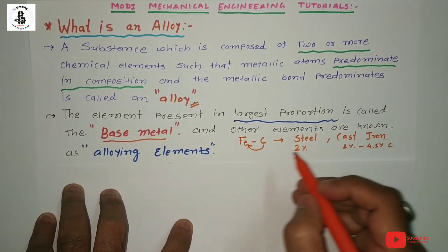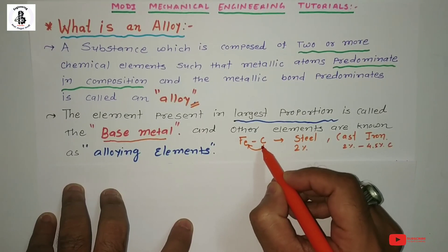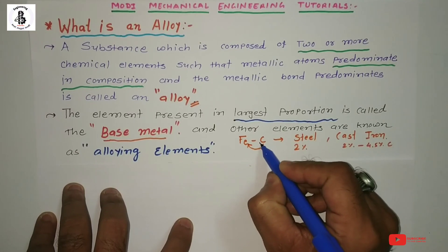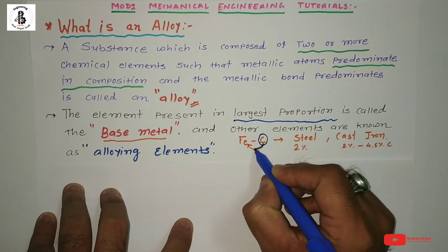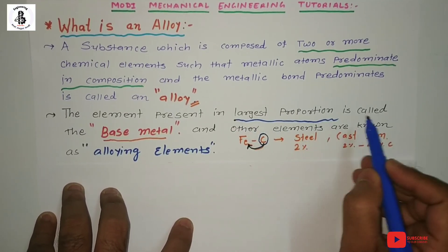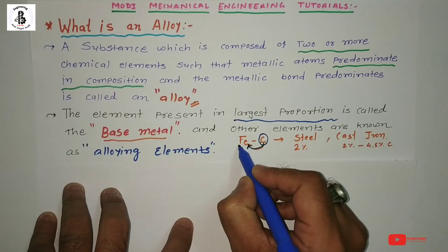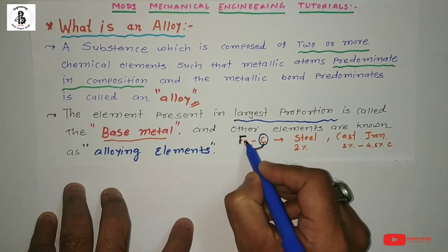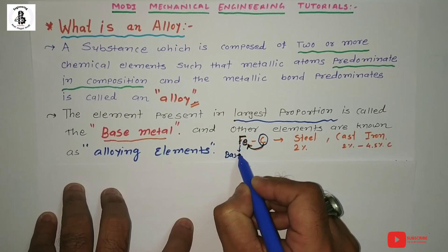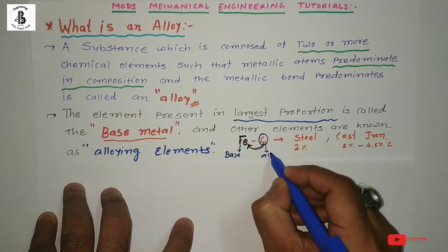Basically in the case of the iron-carbon diagram, carbon material will act as an alloy. This carbon is added into the iron. The largest proportion is called the base metal. In the case of the iron-carbon diagram, Fe acts as the base metal and carbon acts as the alloy.